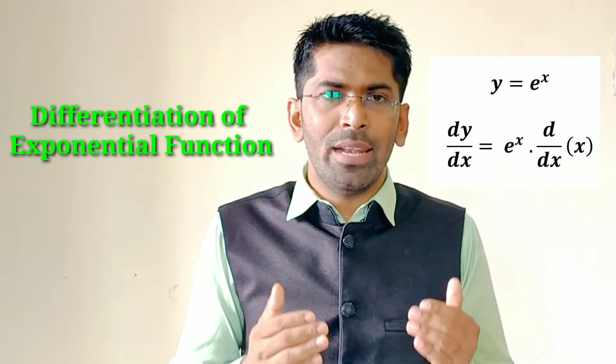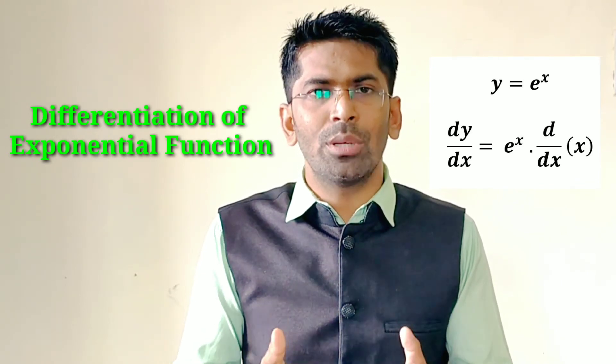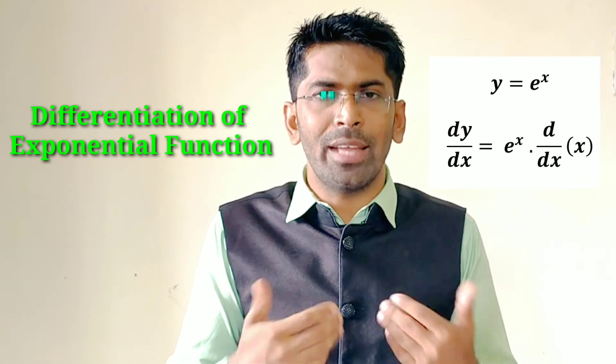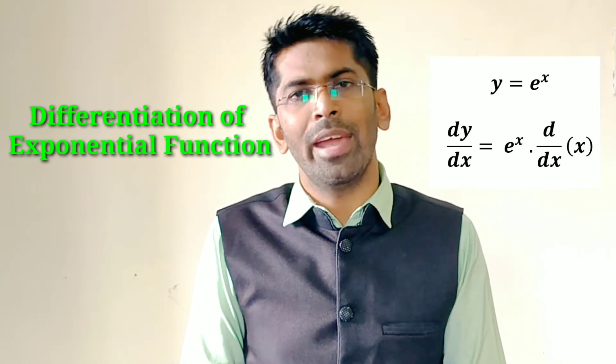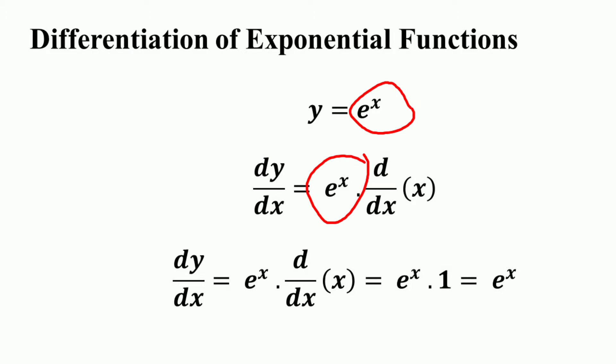The derivative of a natural exponential function is equal to the original natural exponential function times the derivative of the exponent. As per the natural exponential function rule of differentiation, if y = e raised to the power x, where x is a differentiable function, then the derivative dy/dx is equal to e raised to the power x into d/dx of the given function x.